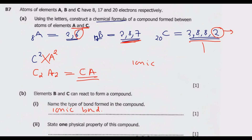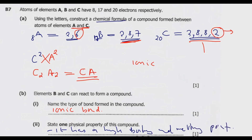Question L2 of B: state one physical property of this compound. One physical property of this ionic compound is that it has a high boiling and melting point. That is a physical property of a compound with this type of bond.